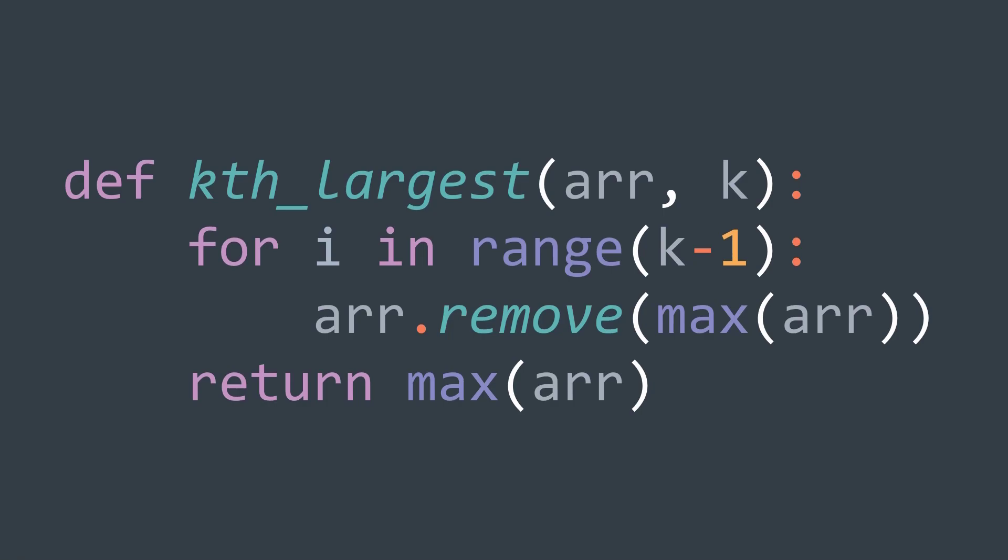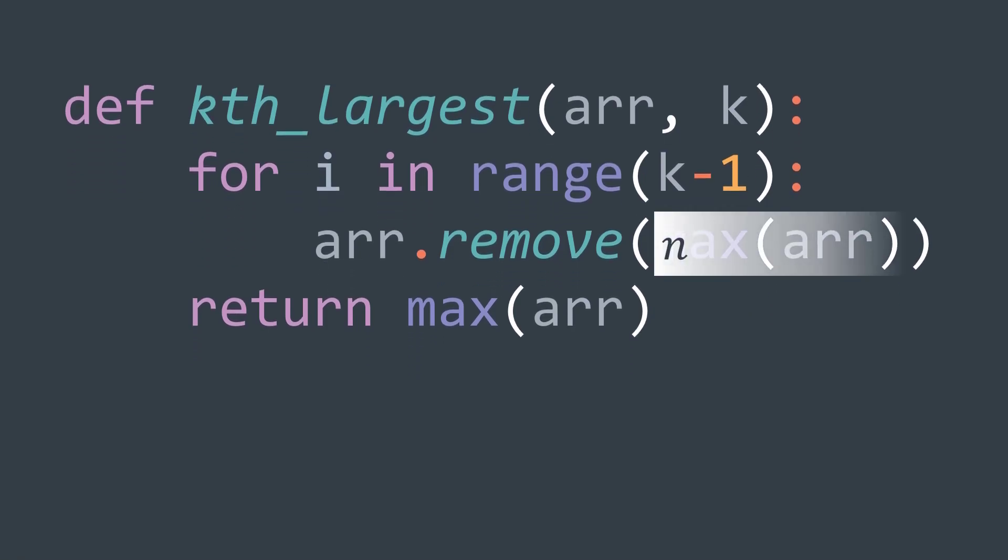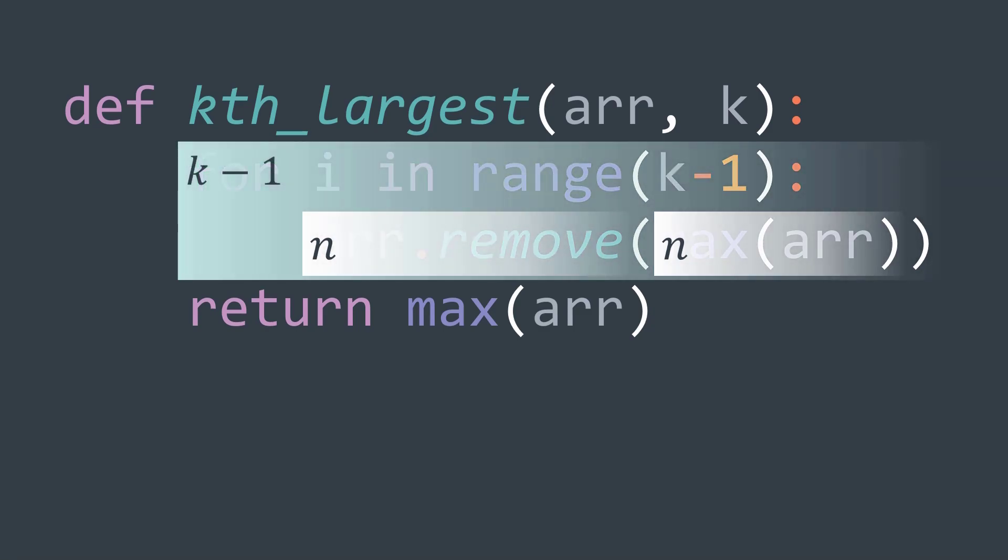For the time complexity, searching for the maximum costs O of n, where n is the number of elements, and removing it from the array costs n in the worst case, because we may need to shift all the elements. And our loop is repeated k-1 times, we have k-1 times 2n, plus n for finding the final largest element.